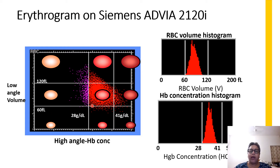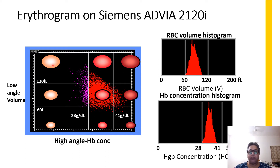In my previous video, I had elaborated on this particular scatter plot of the red cells, where the volume of the red cell is plotted against the hemoglobin concentration and you get a scatter of normocytic normochromic cells. And depending upon the position of the scatter, you will be able to find out the presence of macrocytes, microcytes, hypochromic cells, and hyperchromic cells.